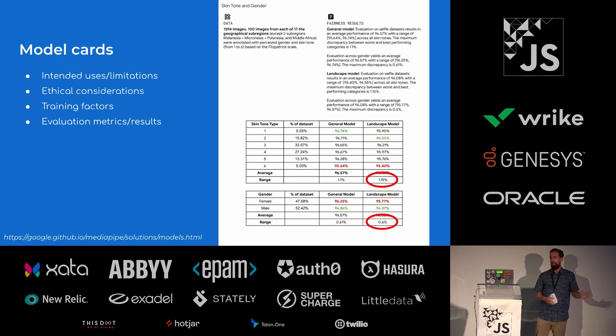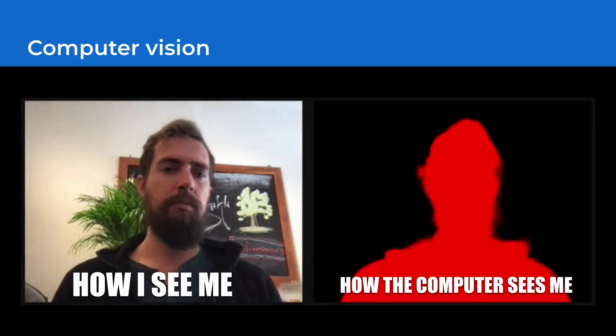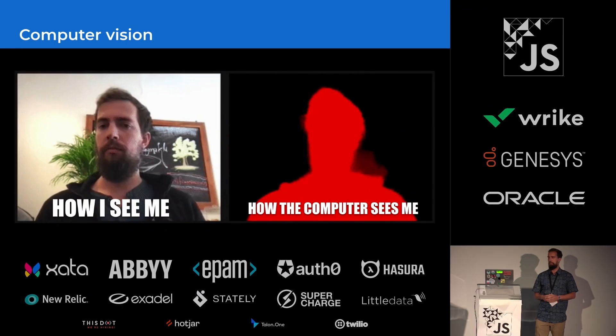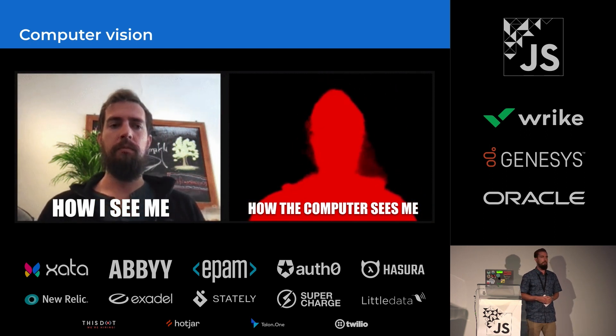For the selfie segmentation model that we'll be using, we can see on the model card that its intended use is to segment a person in an image taken from a webcam, that it was trained on a diverse set of source images including people from all demographics, and that it performs fairly across a variety of people. The selfie segmentation landscape model varies in accuracy only 1.15% between different skin tones and only 0.6% between different genders. This performance is a very important consideration to have when using in an application with a diverse set of users like ours. Now that we have chosen our model, we can begin to see — or rather how the computer will see — how to create a mask for our virtual background. This is, in essence, computer vision.